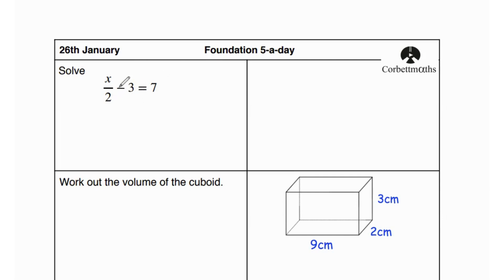First, we're going to move 3 to the other side. Initially 3 is being subtracted from x over 2, so when you move it to the other side you're going to add 3. So x over 2 equals 7 plus 3, which gives us 10.